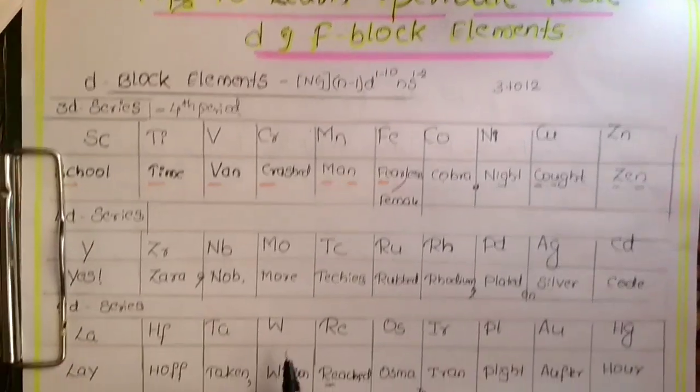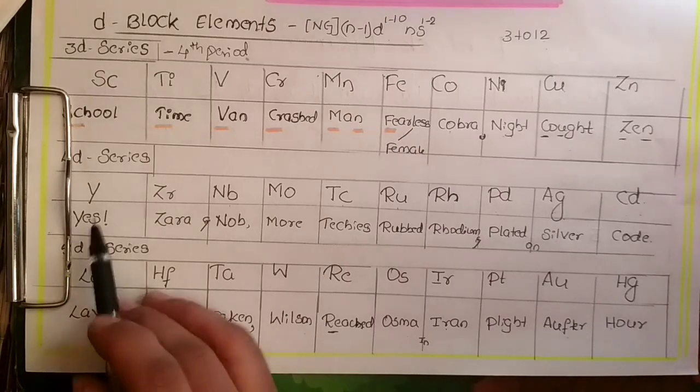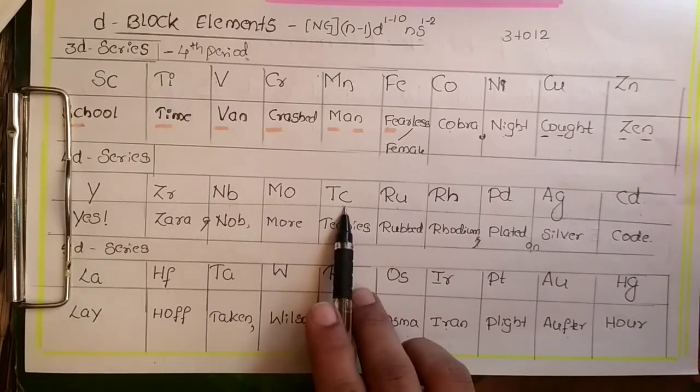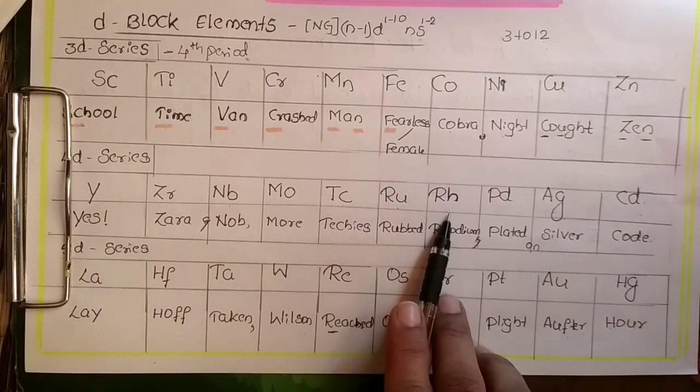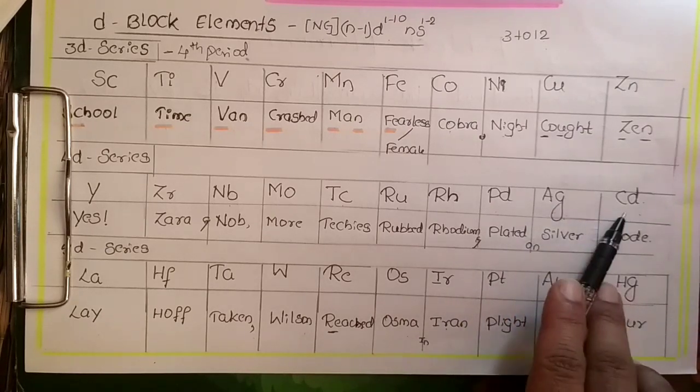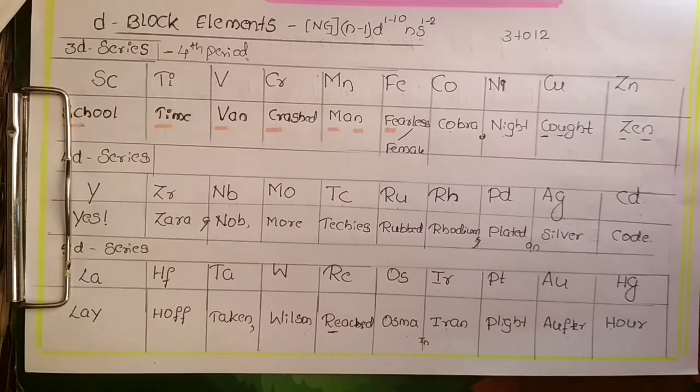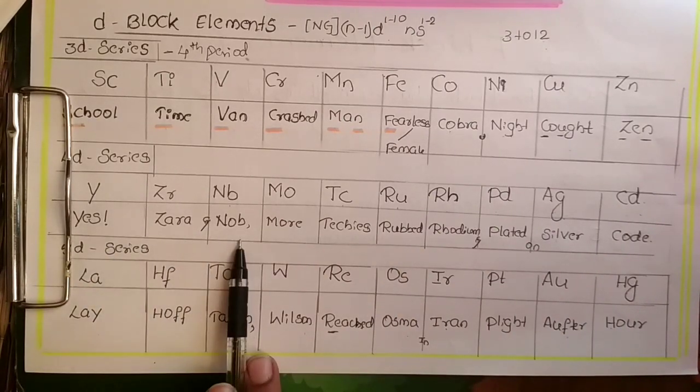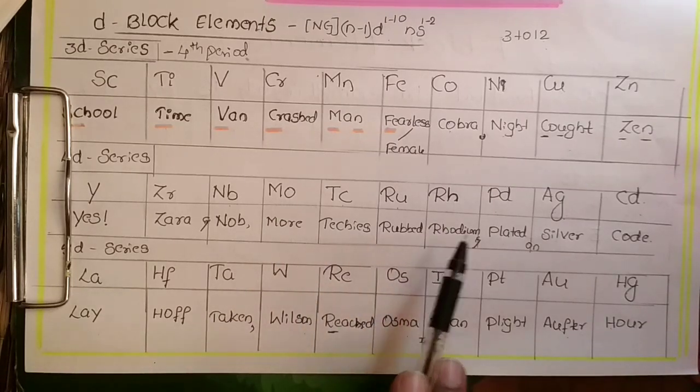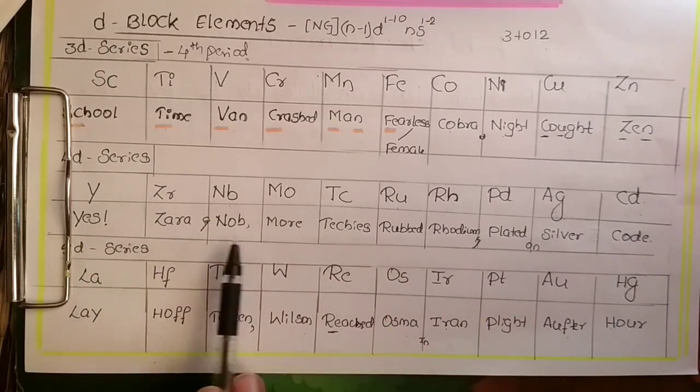Next comes the 4d series elements. The elements are yttrium, zirconium, niobium, molybdenum, technetium, ruthenium, rhodium, palladium, silver (argentum), and cadmium. You can remember this as: yes Zara and no more techies rubbed rhodium and plated on silver code.